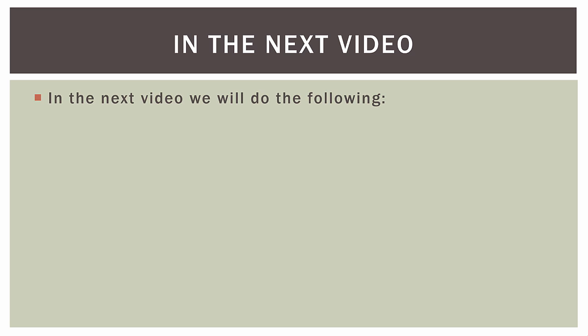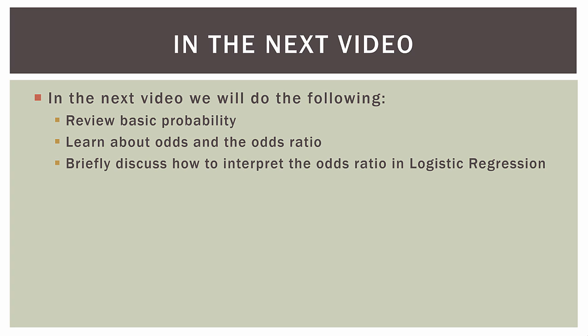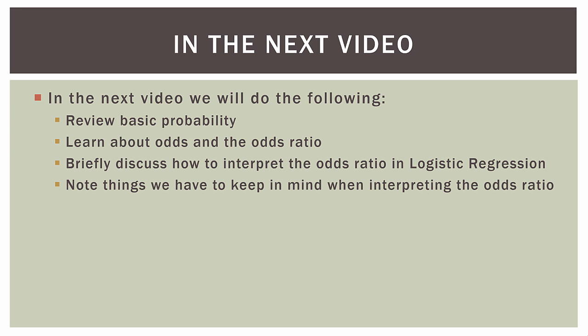Now that we've set the stage by introducing our problem and going over the basic conceptual foundation of logistic regression, let's talk about where we're going in the next video. We will review basic probability — just the basics — because understanding probability is central to logistic regression. We will learn about what odds are and what the odds ratio is, since that's central to understanding logistic regression. We will briefly discuss how to interpret the odds ratio in the logistic regression context. And finally, we will note things to keep in mind when interpreting the odds ratio, since there are some dangers in how we interpret it. So let's wrap up this video and I will see you in the next one.